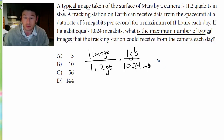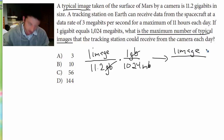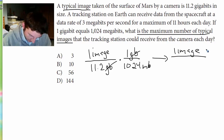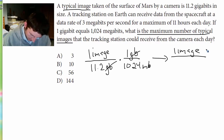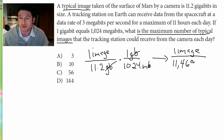Okay, so what does that mean? That means that when we cross out our units, one image is 11.2 times 1024 — that gives us 11,468.8 — and remember our units canceled out — megabits. So now we know how big one of those images is.